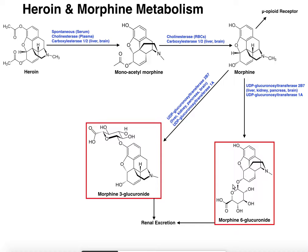These glucuronide residues have many polar hydroxyl groups and a carboxyl group that's charged at physiological pH — charges help solubilize things. So glucuronide residues, like sulfate groups, increase the solubility of these molecules and facilitate renal excretion. In pharmacokinetic terms, morphine actually bypasses phase 1 metabolism entirely — it's not metabolized by any P450s — and goes straight to phase 2 metabolism, which involves these conjugation reactions.